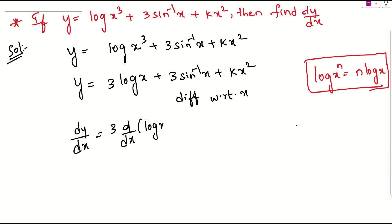So d by dx of log x, plus 3 will be out again. This is d by dx of sin inverse x. Plus k is a scalar, keep it outside. Then it will be d by dx of x squared.